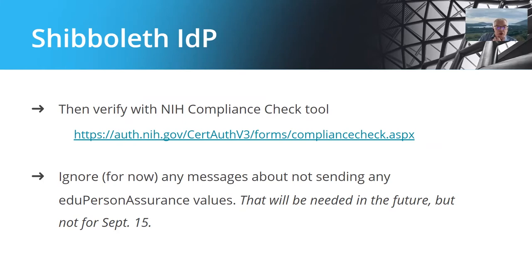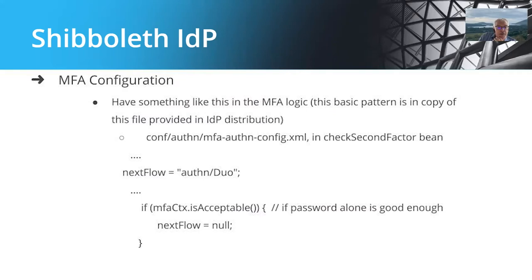Once you've done the Duo and MFA work, check your MFA authn config logic. If you use the second-factor script example provided with the Shibboleth IDP, it already has logic that would cause the user to be sent to Duo if a service specifically asks for RefEds MFA. That's the other piece of the MFA config — the logic in MFA authn config. Everybody has changed that logic in different ways, so we'd have to look at each individual case to know exactly what change, if any, you need to make to ensure RefEds MFA gets invoked when it needs to.